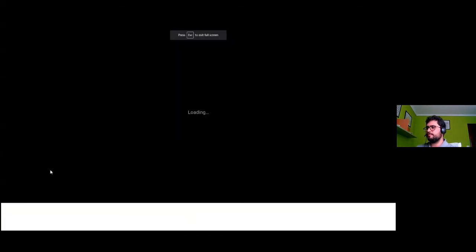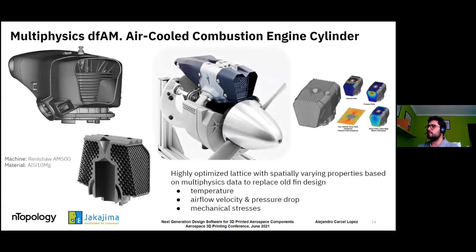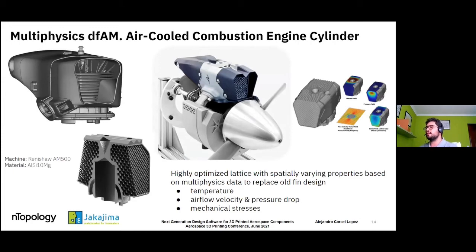Just a quick summary of this case, which was actually manufactured and used in a UAV vehicle. We highly optimized a lattice with spatially varying properties based on multiphysics data to replace the old, heavier fin design. We can also take things like velocity vector fields and pressure drops to not only vary the thickness of the lattice, but as shown with the heat exchanger, vary the geometry or density of the lattice. We also accounted for mechanical stresses, making this a comprehensive multiphysics-driven design.